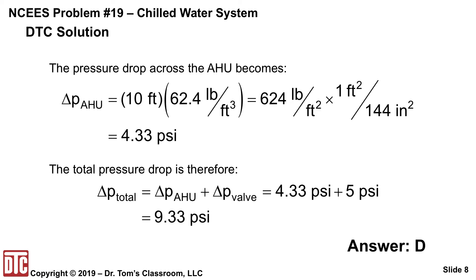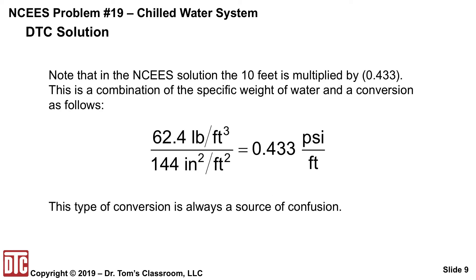Now there was a term here, 0.433. And you kind of wonder where they took 10 feet and multiplied by it. Well, what it was is the conversion that we just did. The gamma, 62.4 divided by 144 inches squared per foot squared. So you've got this 0.433. They didn't give it any units. It just said 0.433, and a lot of confusion is what is that?